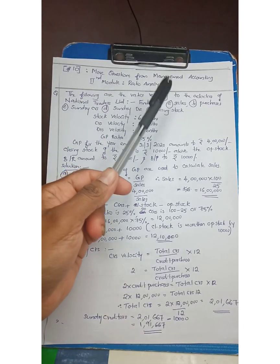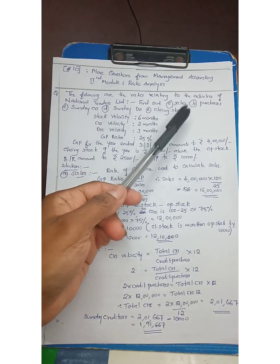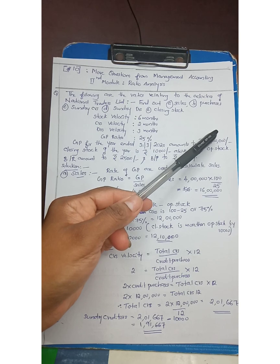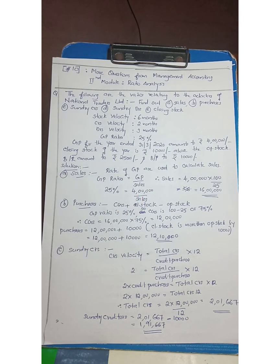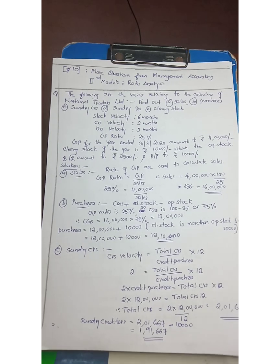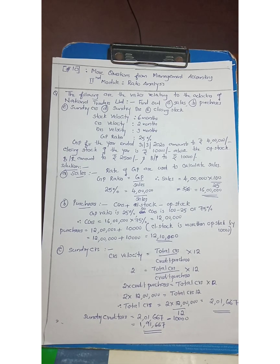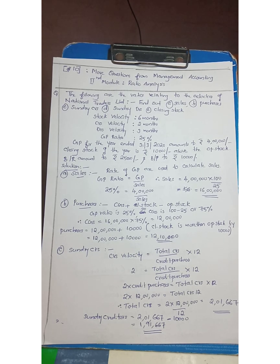Sales is 16,00,000. Now the first is the solution. Next, purchases are calculated. Purchase is one of the items coming under the debit side of the trading account. If you have a trading account, you will see the calculation of the trading account. Purchase will be an equation.